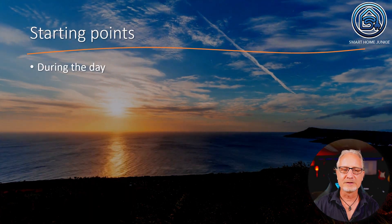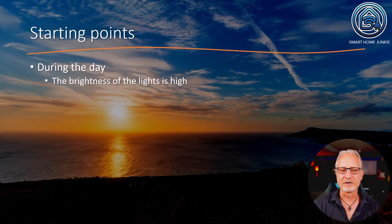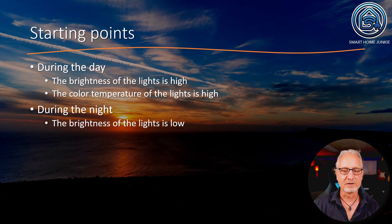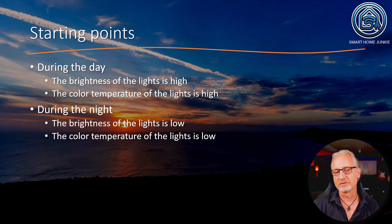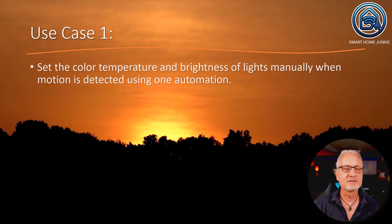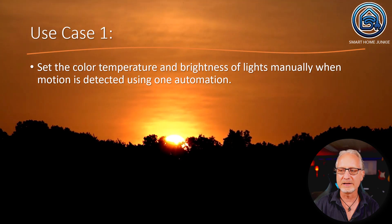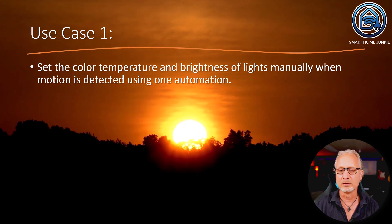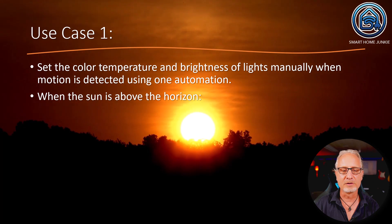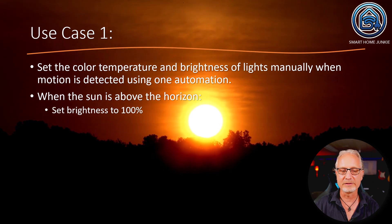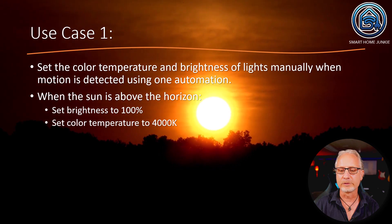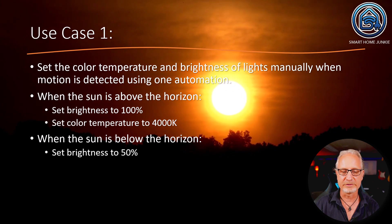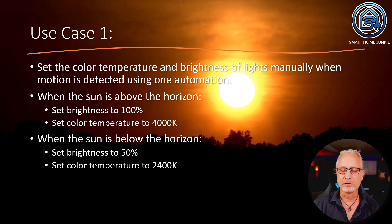The starting points: during the day, the brightness of the lights is high and the color temperature of the lights is high. During the night, the brightness and color temperature of the lights are low. The first use case is to set the color temperature and brightness of lights manually when motion is detected using one automation. When the sun is above the horizon, set the brightness to 100% and the color temperature to 4000 Kelvin. When the sun is below the horizon, set the brightness to 50% and the color temperature to 2400 Kelvin.